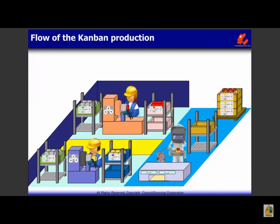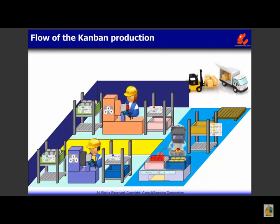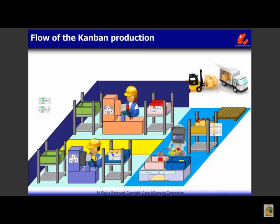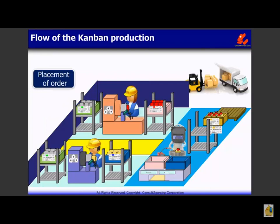Let's find out the flow of Kanban production. Products are shipped based on orders received. The Kanban of shipped products is handed down to the previous process in the assembly line. Parts required for assembly are picked up and assembly is carried out. In the previous processing line, the Kanban of picked-up parts becomes a production instruction order. Materials are picked up from storage and processing is carried out. The Kanban is issued from the post-process to the previous process to pick up the required parts, with instruction for production moving backwards through the processes.